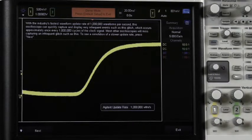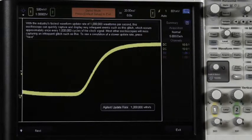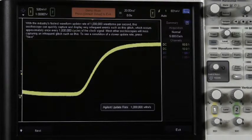You can see in this real signal example, a once in 1 million glitch is readily being captured and shown on the display given this scope's 1 million waveforms per second update rate.